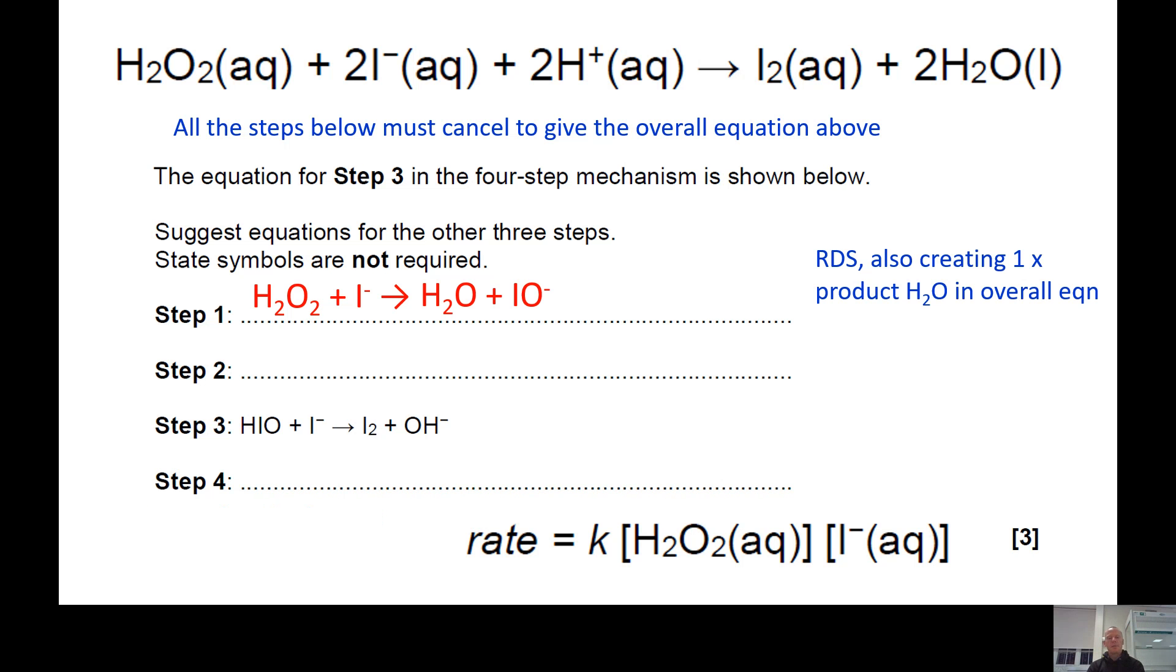While thinking about what I could make from combining those two species, the first thing that came to me was water and IO-. If you're familiar with rate determining step style questions, you'll need to get your head around being able to create slightly unusual looking species that might not be in the overall equation. IO- might not be a species you've come across before but water obviously is and IO- is what's left behind.